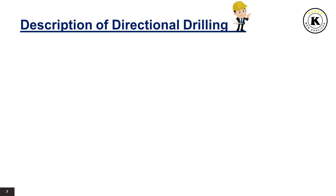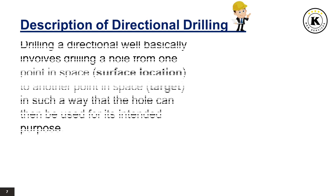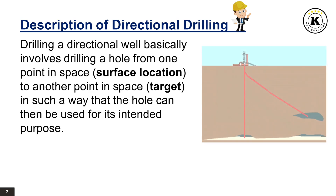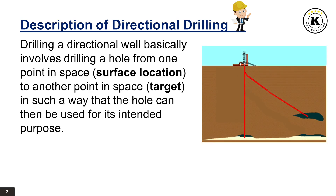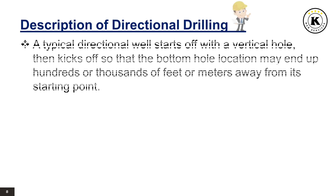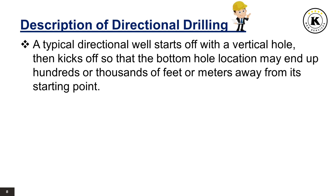Description of directional drilling: Drilling a directional well basically involves drilling a hole from one point in space, the surface location, to another point in space, the target, in such a way that the hole can then be used for its intended purpose. A typical directional well starts off with a vertical hole, then kicks off so that the bottom hole location may end up hundreds or thousands of feet or meters away from its starting point.